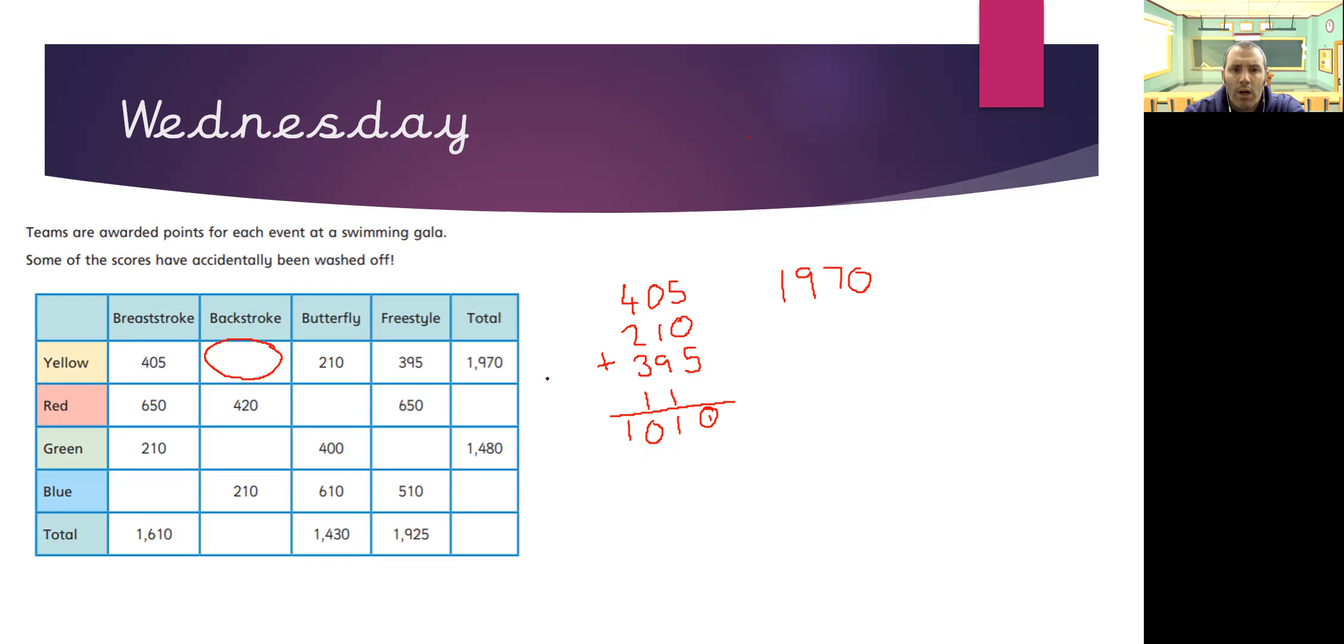And I need to know what goes in the missing space. So I'm going to need to subtract that from 1,970. There we go. So I'm going to put the minus sign there to remind me what I'm doing. 0 from 0. Well, that's going to be 0. 7 take away 1 will be 6. 9 take away 0 will be 9. 1 take away 0 will be 0. So my answer is 960.